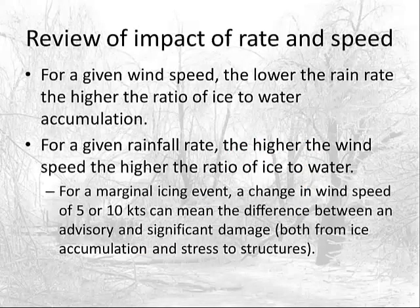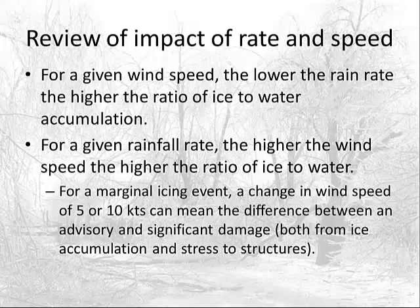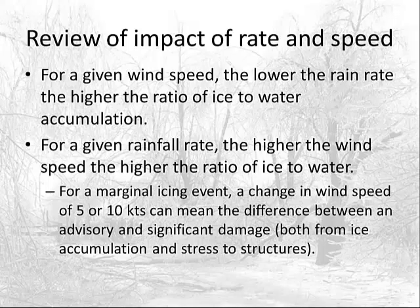For a given wind speed, the lower the rain rate, the higher the ratio of ice to water accumulation. For a given rainfall rate, the higher the wind speed, the higher the ratio. For a marginal icing event, a change in wind speed of five or ten knots can mean the difference between an advisory and significant damage — both from ice accumulation on wires and from the increased stress of wind blowing those ice-laden wires horizontally.